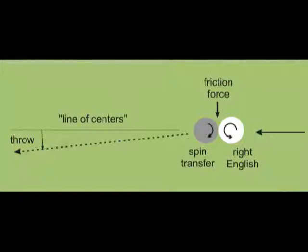When the cue ball hits an object ball, generally you expect the object ball to head in the line of centers direction. This is a line that goes through the center of both the cue ball and the object ball.